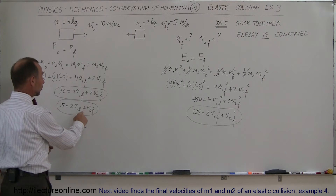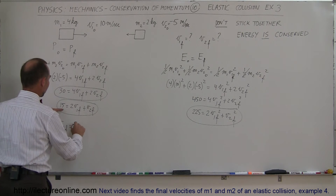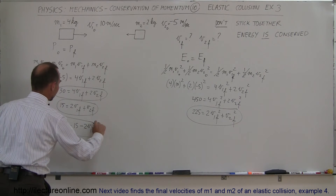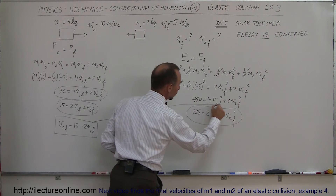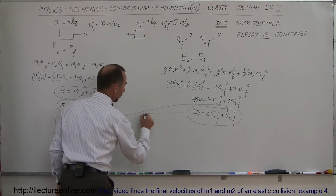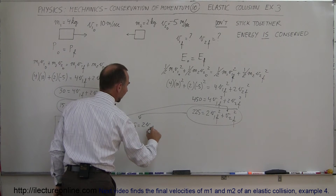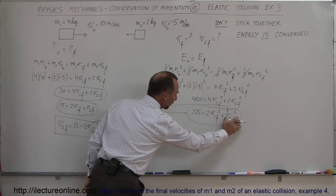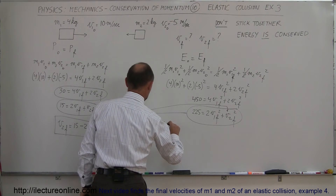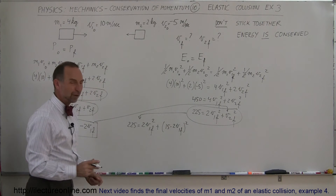The preferred method is to solve one variable in terms of the other from the linear equation. From 15 = 2·V1f + V2f, we get V2f = 15 − 2·V1f. We then substitute that expression into the energy equation: 225 = 2·V1f² + (15 − 2·V1f)².